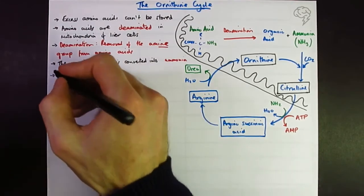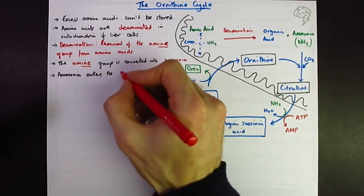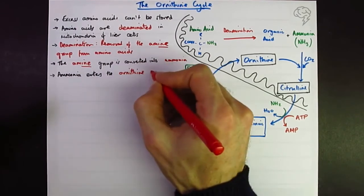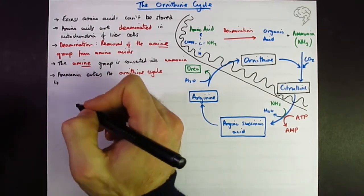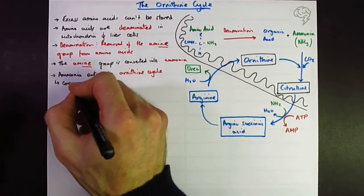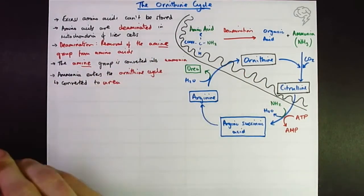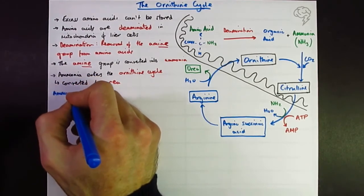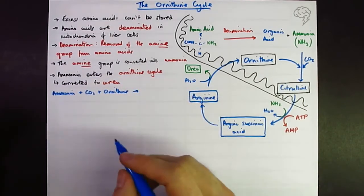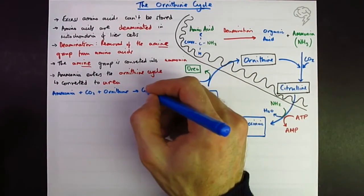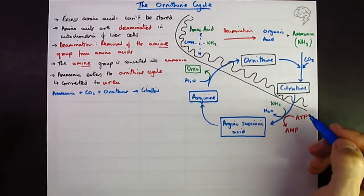Let's finish off the notes. The amine group is converted to ammonia. Ammonia enters the ornithine cycle. From an exam paper, the next answer is: it's converted to urea. We can do that as a flow diagram: ammonia plus CO2 plus ornithine goes to citrulline. That's the most important stage we need to know about.